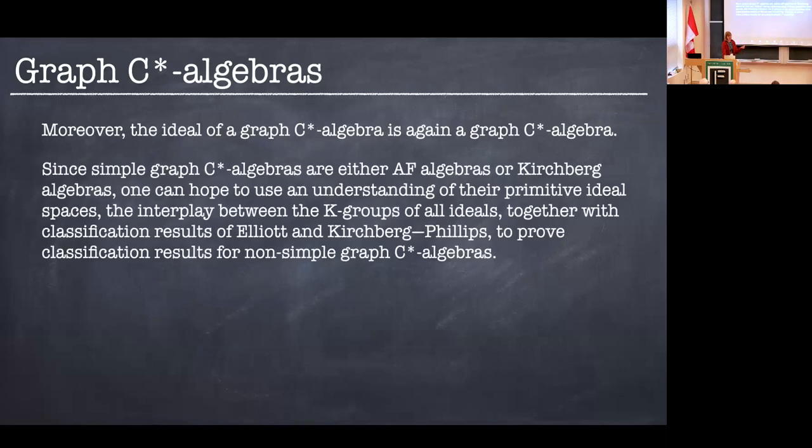And we also know that the ideal of a graph C-Star algebra is, again, a graph C-Star algebra, as is the quotient. So this is also very useful. Now, it turns out that simple graph C-Star algebras are always either AF algebras, which is approximately finite, so inductive limit of finite dimensional C-Star algebras, or they're purely infinite. So in this case, we know from the C-Star algebra classification program exactly what these are. We can classify them by K-theory. This is due to George Elliott, and then also in the purely infinite case, Chris Phillips, who's right here in the front, as well as Eberhard Kirchberg. And so one can hope to use the understanding of the interplay between their primitive ideal space and K-theory to try to make some sort of classification for graph C-Star algebras outside the simple case. And not a lot is known for classification outside the simple case.